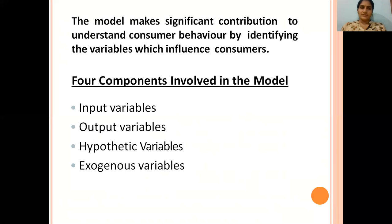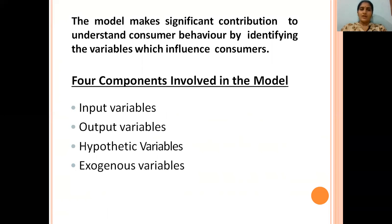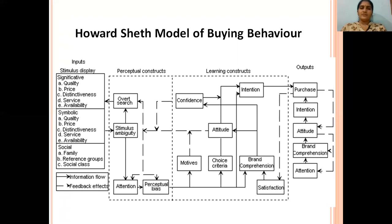In today's session we discussed the Howard-Sheth model, which has three levels of decision making: extensive problem solving, limited problem solving, and routinized response behaviour. We saw how this model was developed, the four components or variables involved — input variables, output variables, hypothetical variables, and exogenous variables — and a pictorial representation of the model including its constructs, stimuli, information flow, and feedback effects.